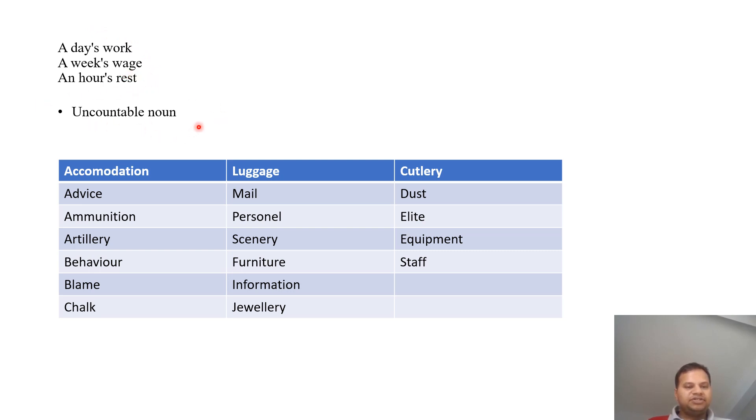Uncountable nouns, for example, accommodation, luggage, these kind of nouns we cannot count. Cutlery, advice, mail, dust, ammunition, personnel, delight, artillery, scenery, equipment, behavior, furniture, stuff, blame, information, chalk, jewelry.